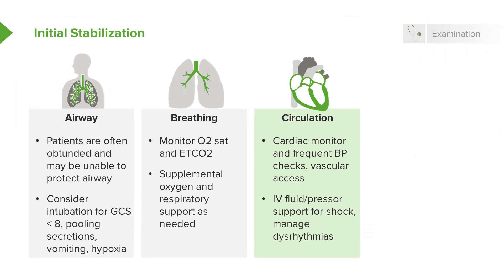From a circulatory standpoint, there are a number of poisonings that can cause alterations in heart rate and blood pressure, and we want to monitor the patient very carefully with continuous cardiac monitoring, frequent blood pressure checks, and good vascular access. For patients in shock or hypotensive, we give IV fluids or vasopressor support, and if the toxic exposure has caused a cardiac dysrhythmia, we address that as well.